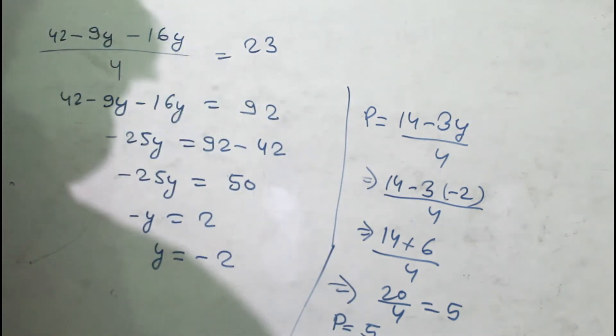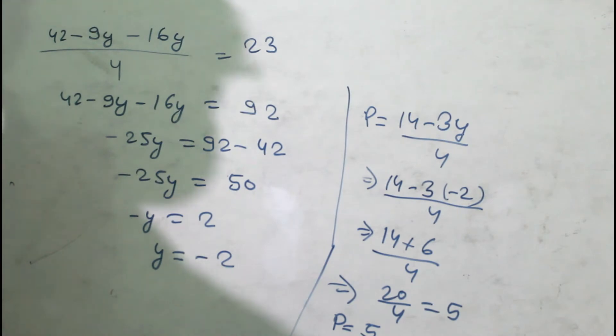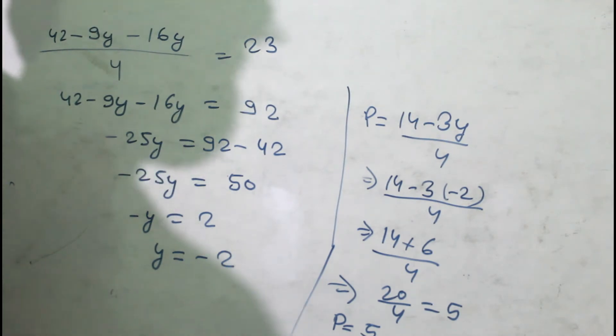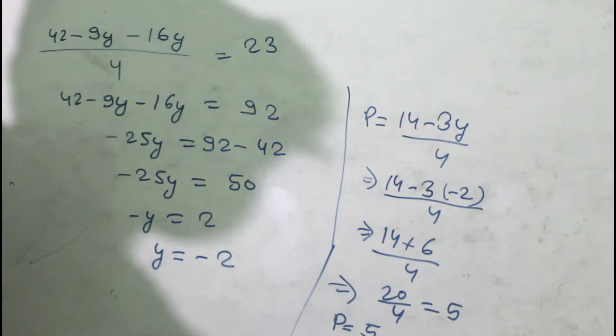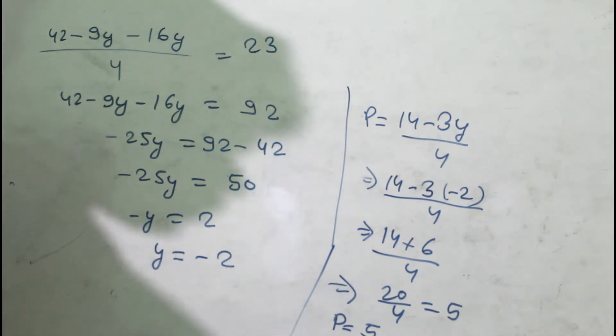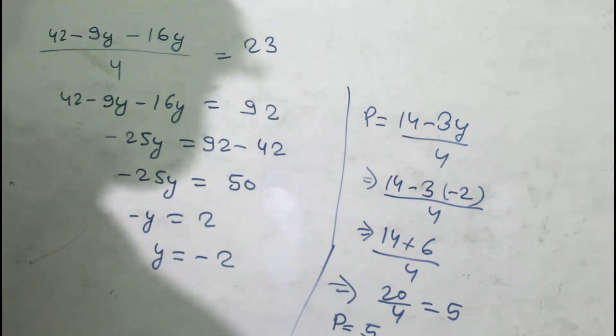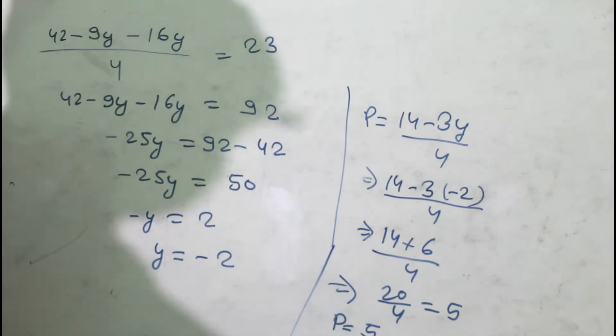So y = -2. Since we assumed 1/x = p, and p = 5, we have 1/x = 5, which means x = 1/5.